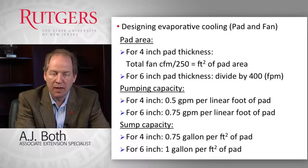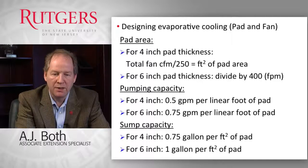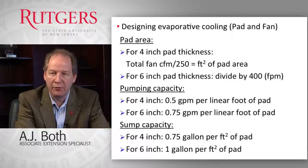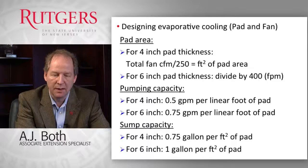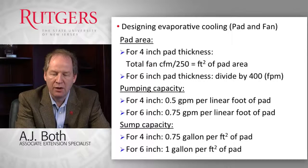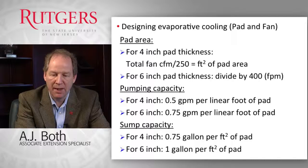The pumping capacity required also depends on whether you use a four-inch or six-inch pad. For the four-inch pad, you need half a gallon per minute per linear foot of pad. For the six-inch pad, you need 0.75 gallons per minute per linear foot of pad material. The sump or tank capacity for the four-inch pad thickness is three-quarters of a gallon per square foot of pad area, and for the six-inch pad thickness you need one gallon per square foot of pad area.